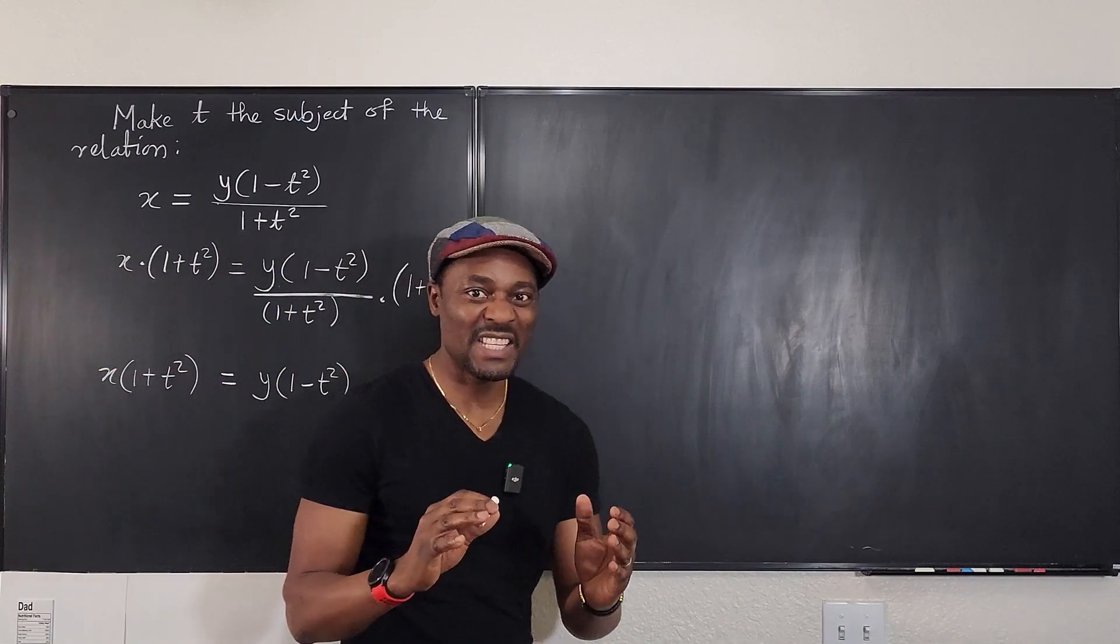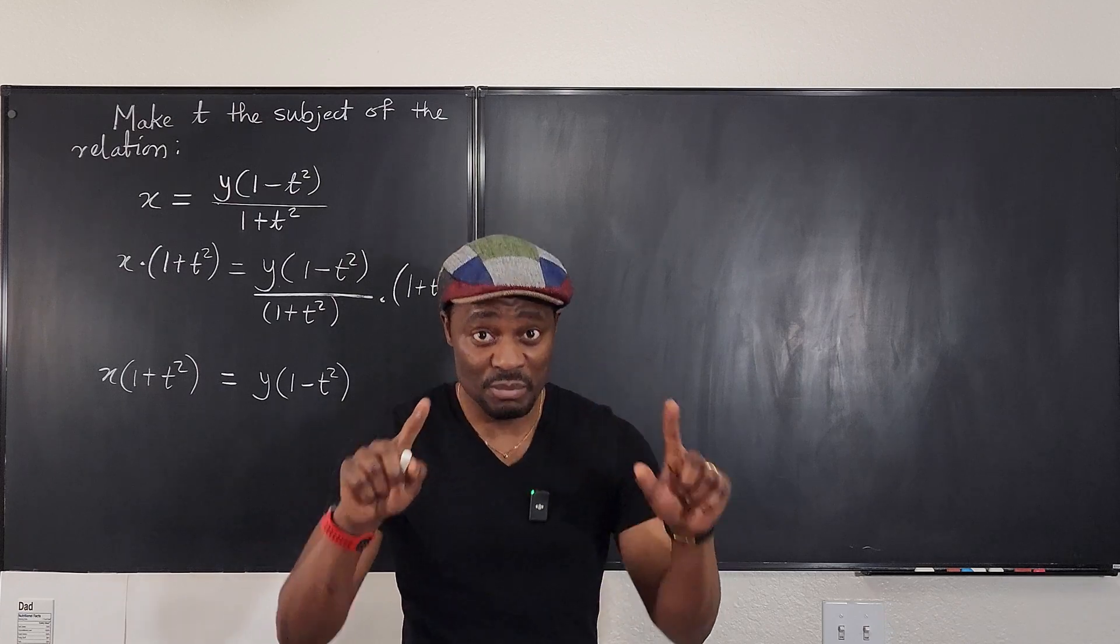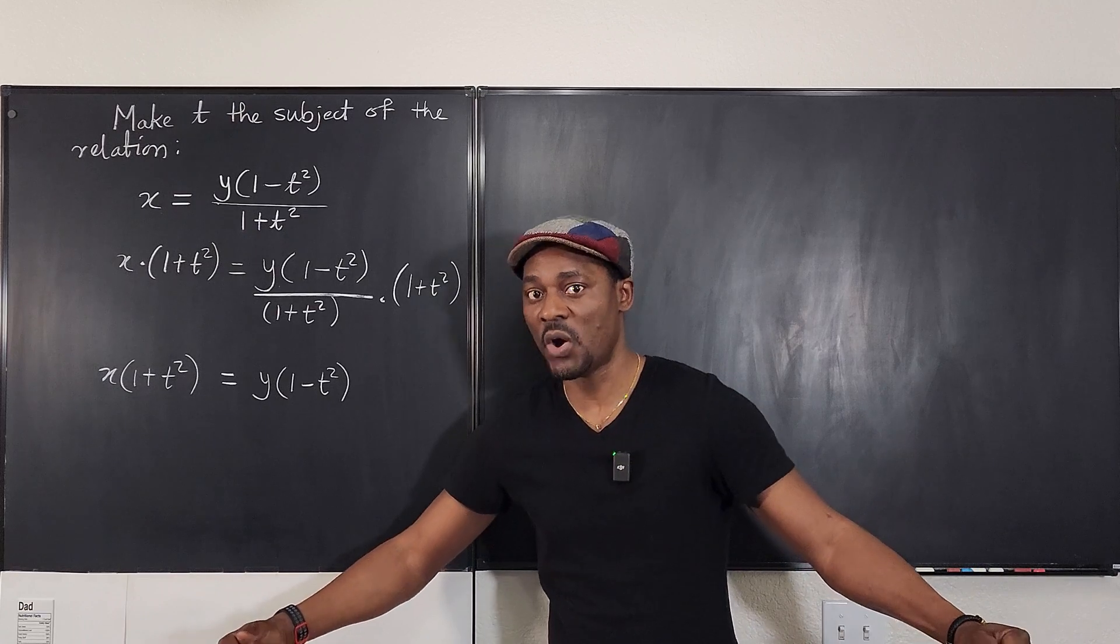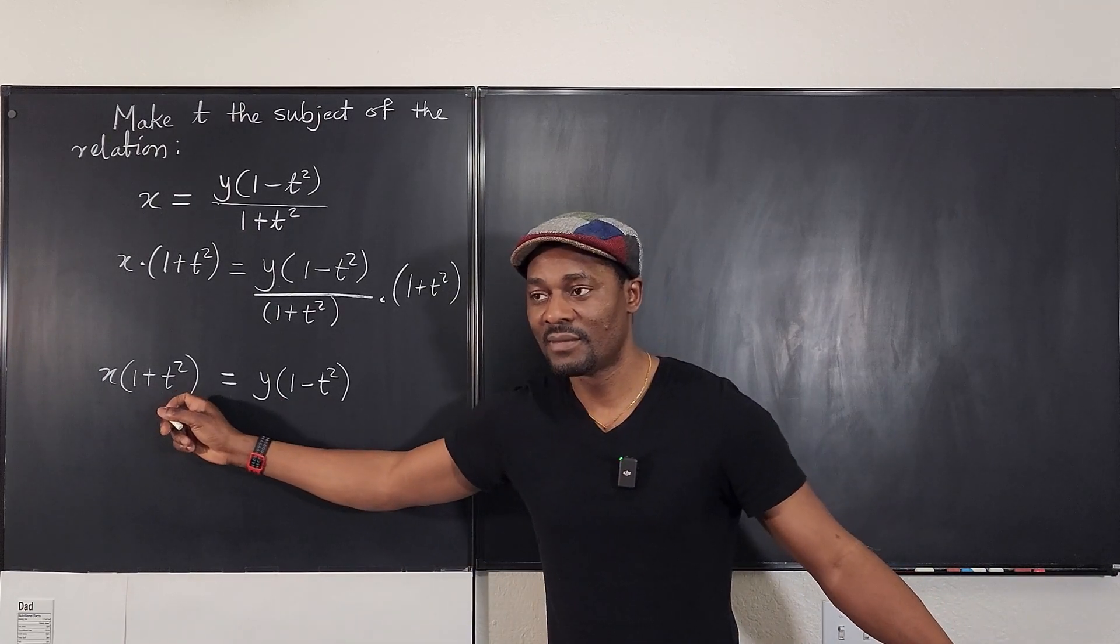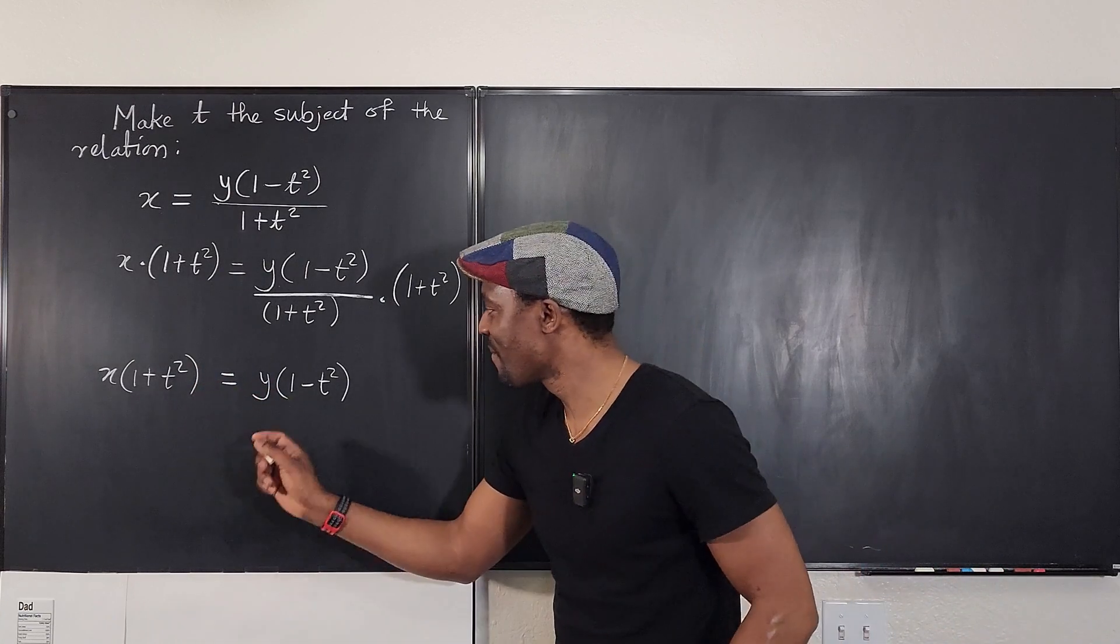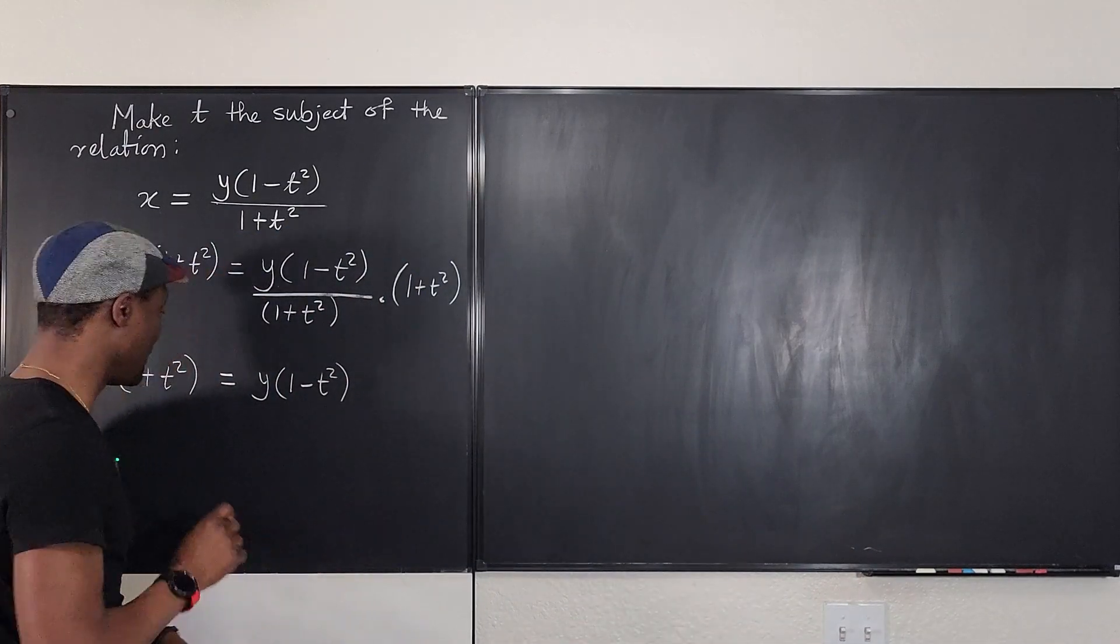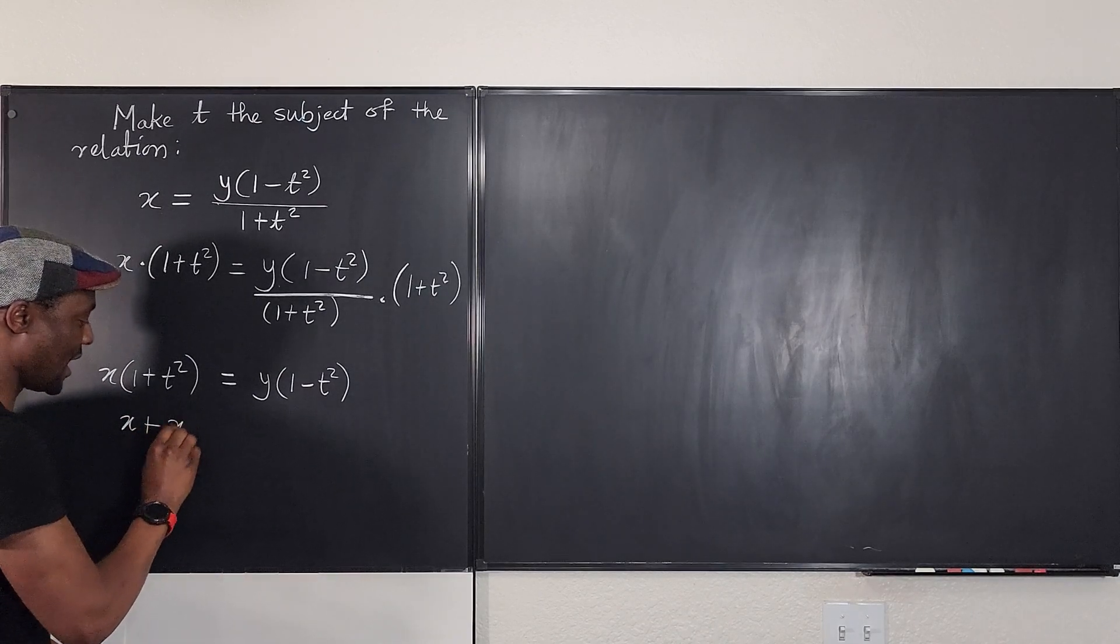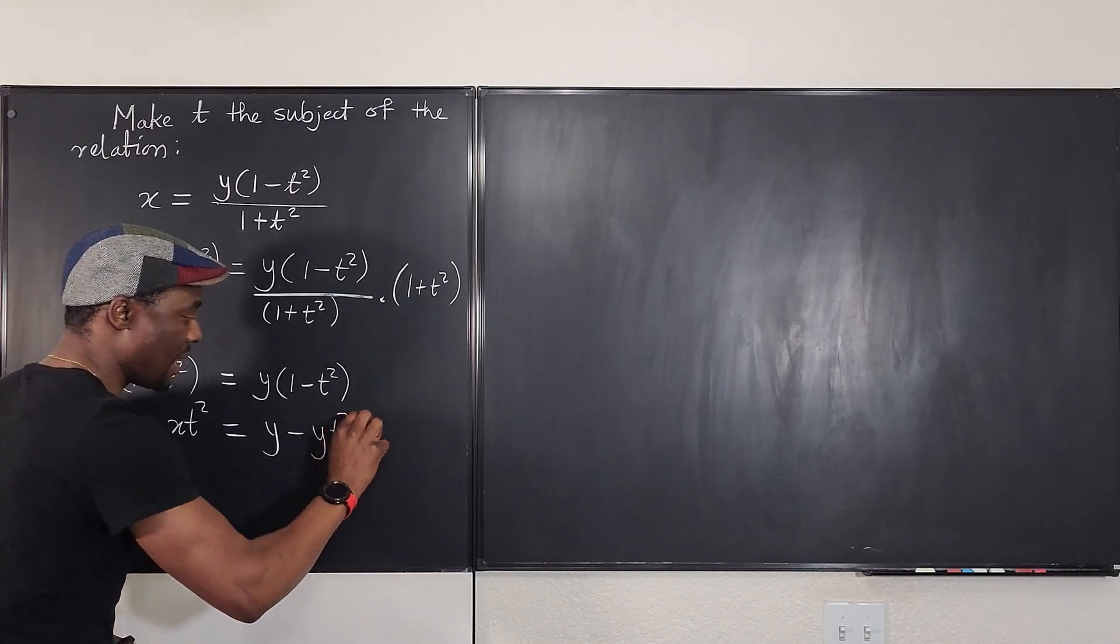Now what you're about to isolate is already in, is currently in prison. That's how I call it. When you have a parenthesis around whatever you need to isolate, you have to open the doors of the prison and get this guy out. So you have to distribute. Remember, it's the first thing. There's no other way. You have to distribute because this is the guy we're focused on. So this is X plus X T squared. And we multiply this is going to be Y minus Y T squared.